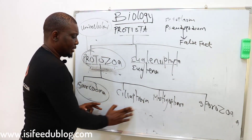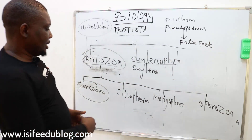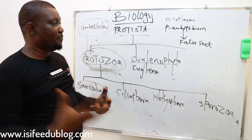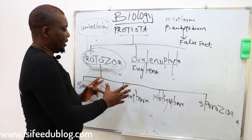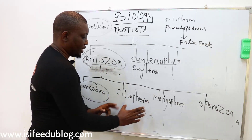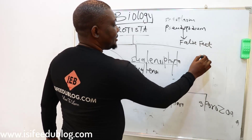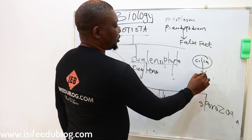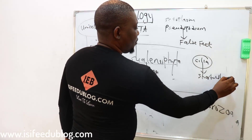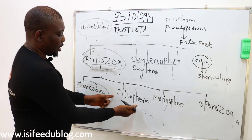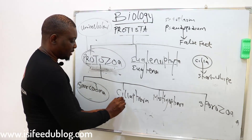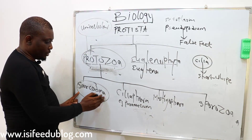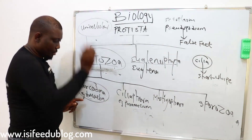Another group of protozoa that shows a little advancement is Ciliophora. The word Ciliophora is associated with the kind of movement in this class — movement is aided by a structure called cilia. Cilia is another word used to describe a short whip. A good example of the Sarcodina class of protozoa is Amoeba.